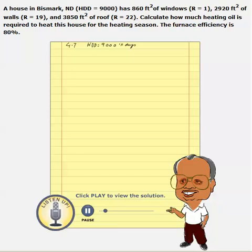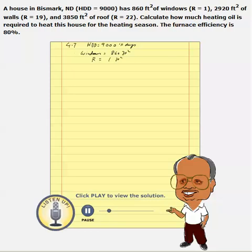We also know the surfaces of each of these components, like windows. The window area is given as 860 square feet. We also know the R-value of this — R-value is given as 1, in units of foot-squared degrees Fahrenheit hours per BTU.